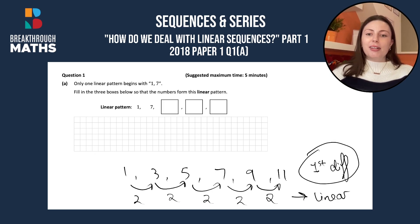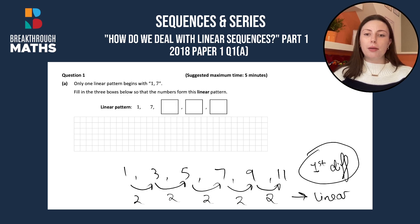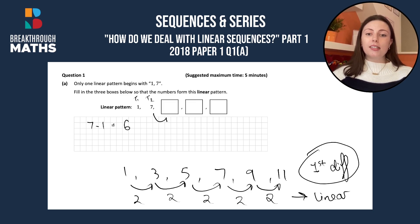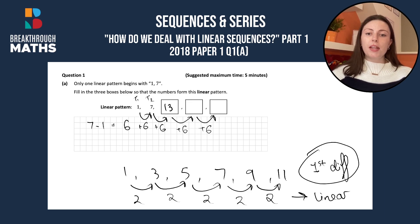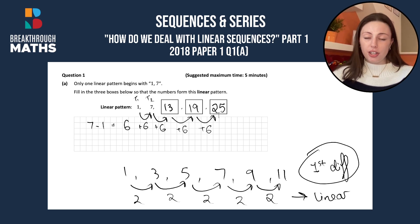So what we will do now is look at this linear sequence. We're told to fill in three boxes so that the numbers form this linear pattern. We're given our first term and term 2. The difference between term 1 and term 2 — 7 minus 1 — gives us 6. So the difference between each of our terms is going to be 6. We add on 6 to 7 and we get 13. If we add on 6 to 13, we get 19. And if we add on 6 to 19, we get 25. So that is our linear pattern completed.